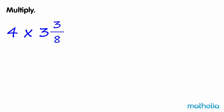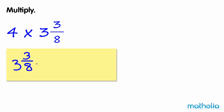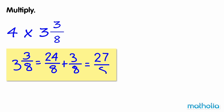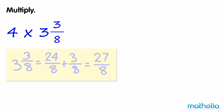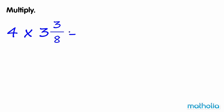Multiply. We need to find four times three and three-eighths. Let's express the mixed number three and three-eighths as an improper fraction. Three and three-eighths is equal to twenty-four-eighths plus three-eighths, which is equal to twenty-seven-eighths. So four times three and three-eighths is equal to four over one times twenty-seven-eighths.